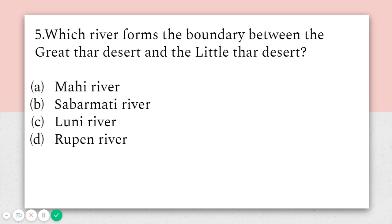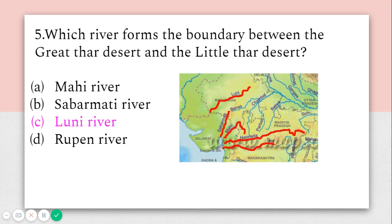The fifth question asks: which river forms the boundary between the Great Thar Desert and the Little Thar Desert? The Thar Desert is divided into two parts by a river. The options are Mahi river, Sabarmati river, Luni river, and Rupin river. The answer is the Luni river. As you can see in the figure, the area west of the Luni river is the Great Thar Desert and east of it is the Lesser Thar Desert.